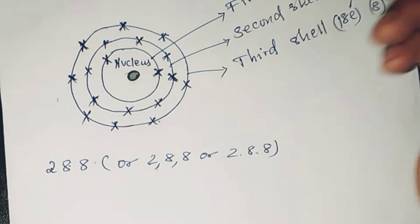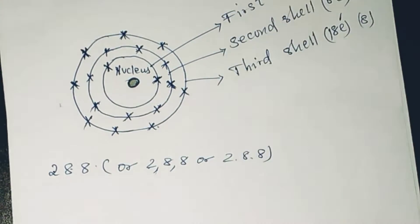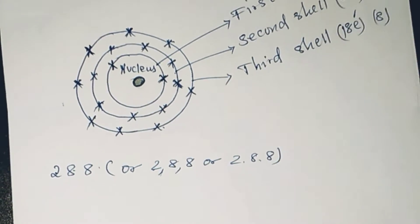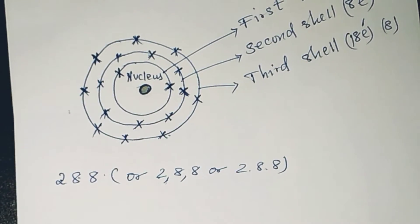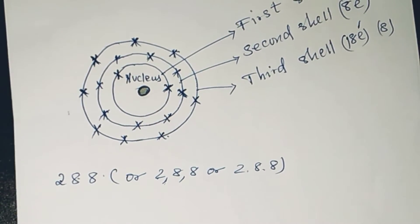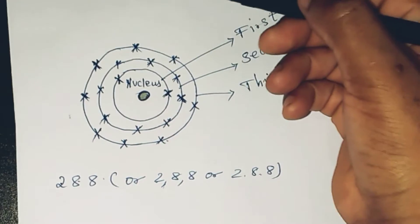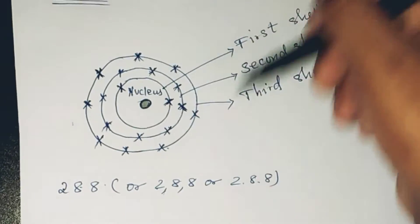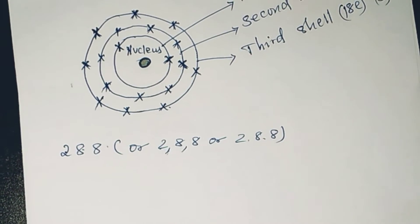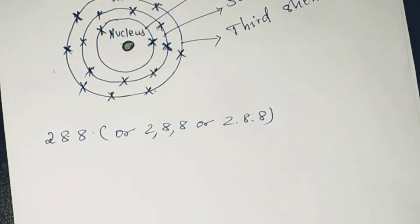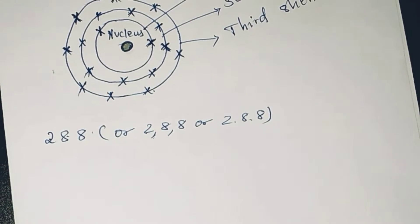There are many shells for different atoms. For example, if an atom has, let's say, 36 protons, the shells also increase—there's also a fourth shell, fifth shell, sixth shell, depending on the atom. There's this simple formula that you don't need to memorize, so just remember the formula.